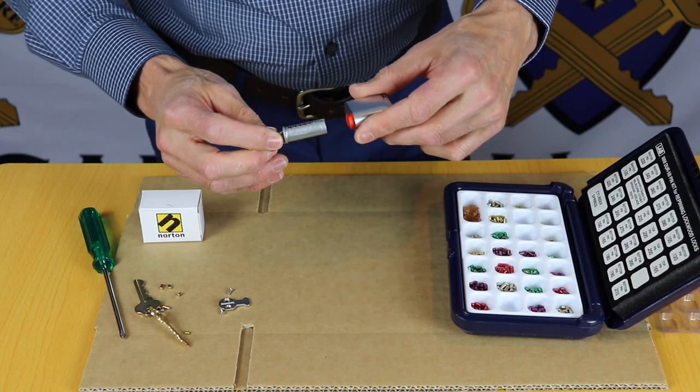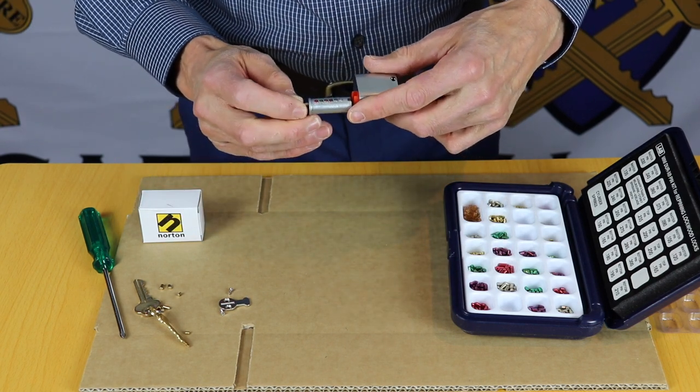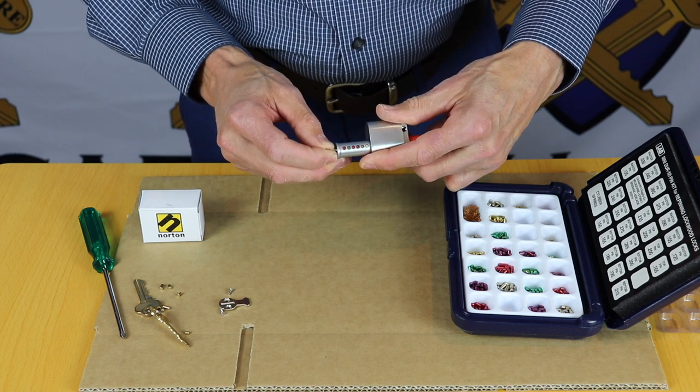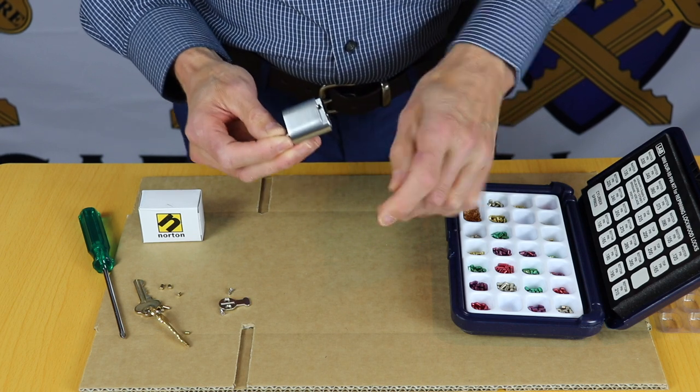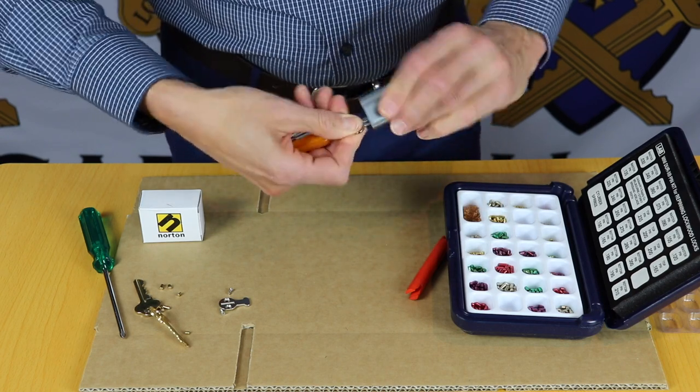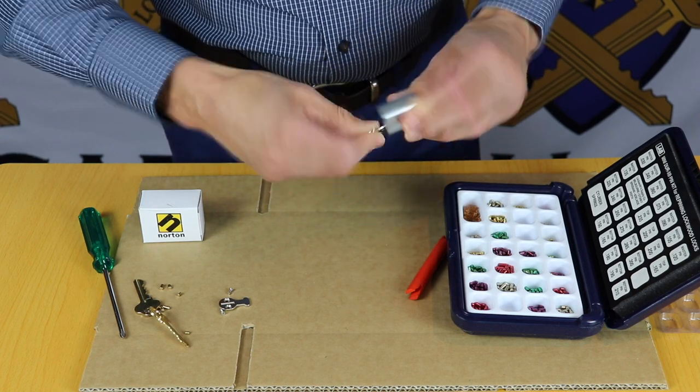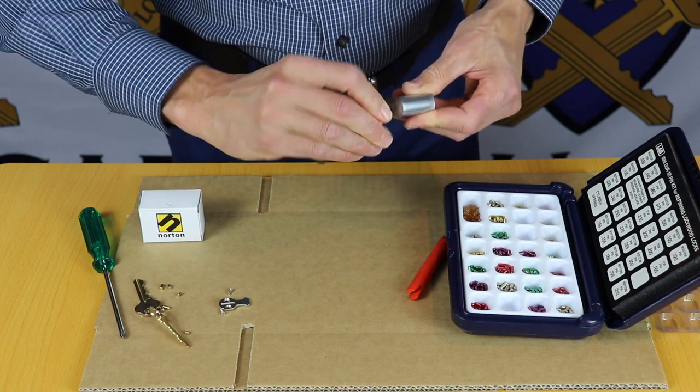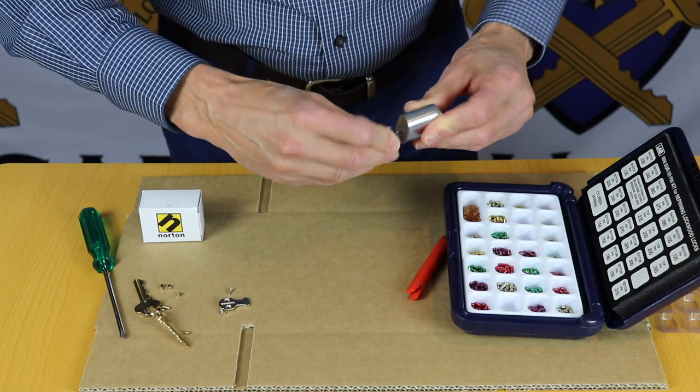So holding the actual cylinder at a 45 degree angle now, we can now push the barrel back in. Take our Argus follower away, we can test it. The key turns nicely, the barrel's turning easily inside the cylinder, so our pins are the correct height for the key.